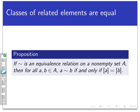Now the next property has a quite lengthy proof and is a really important concept that will show up in later videos. If tilde is an equivalence relation on a non-empty set A, then if a and b are any points in capital A, a is equivalent to b if and only if their equivalence classes are equal. In other words, two different points can give equal equivalence classes as long as they are related to each other — and that relationship goes both ways. This is a complex statement, so let's break down how the proof is going to be set up.